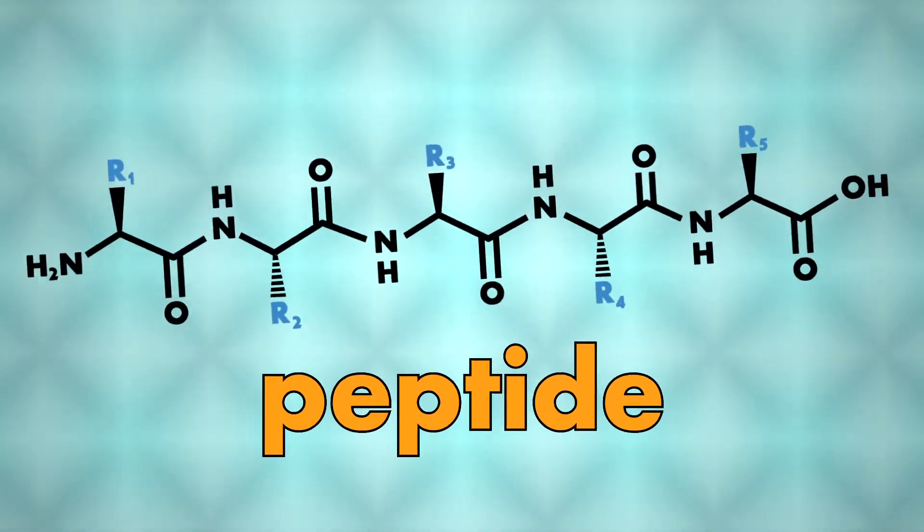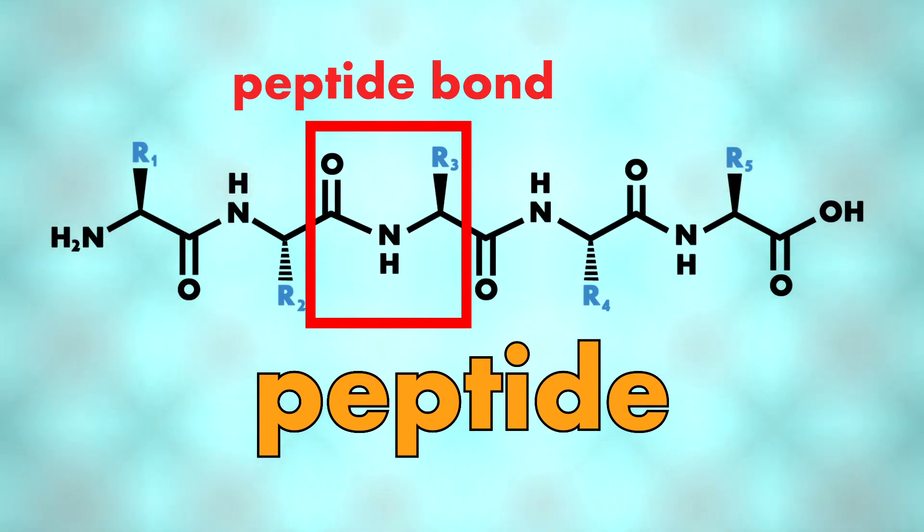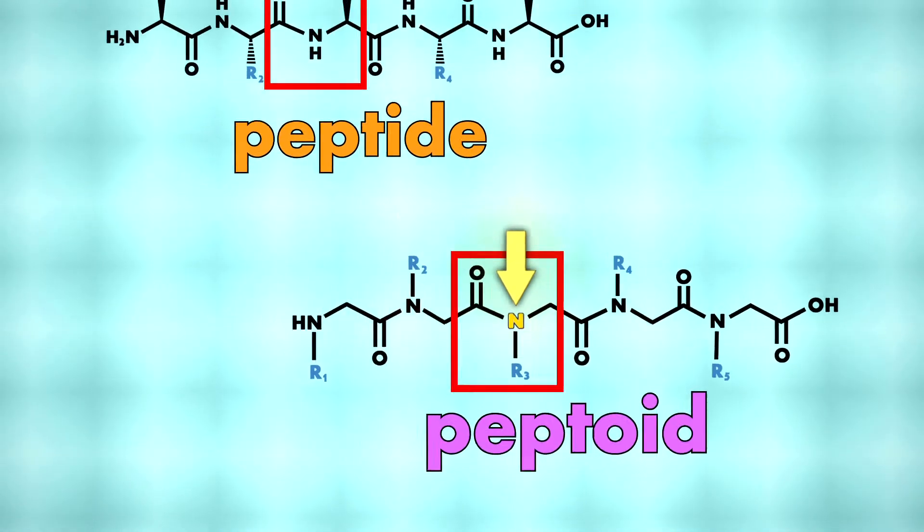We call them peptoids because they're very similar to the peptides that are used to form proteins. Peptides are small proteins generally less than 100 amino acids long linked together by a peptide bond. Peptoids are modified peptides in which the side chain groups are connected to the main chain nitrogen atom instead of the carbon atom.